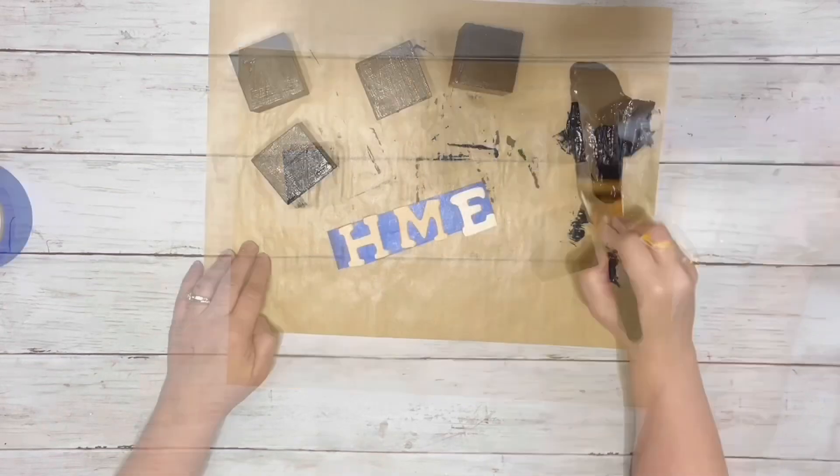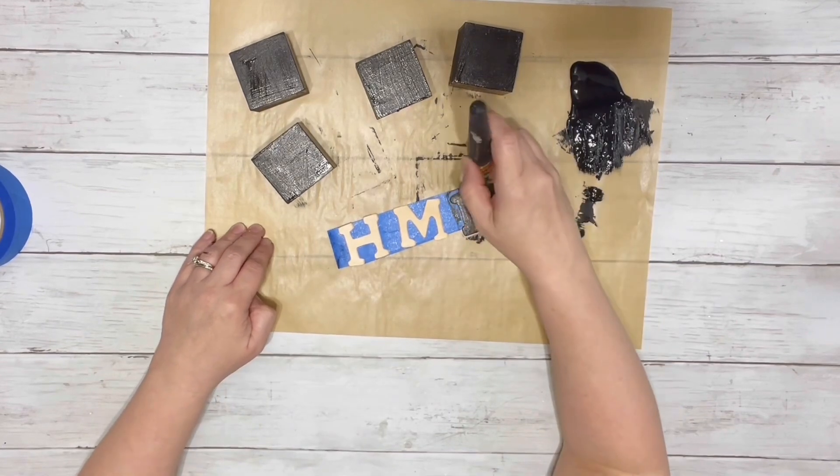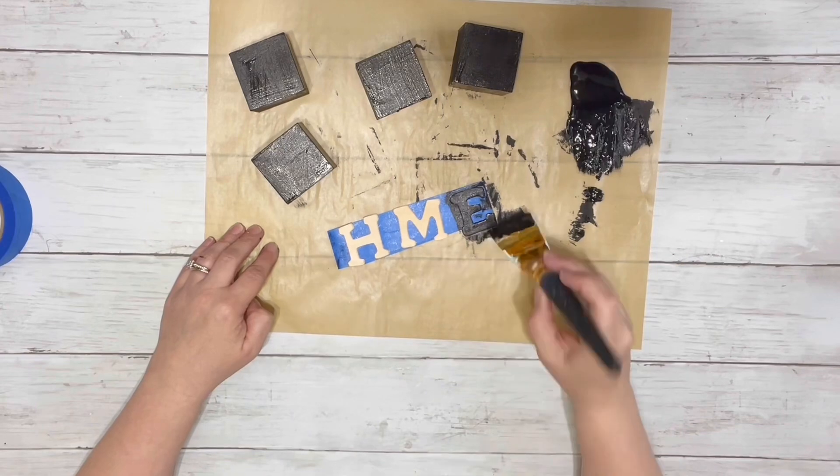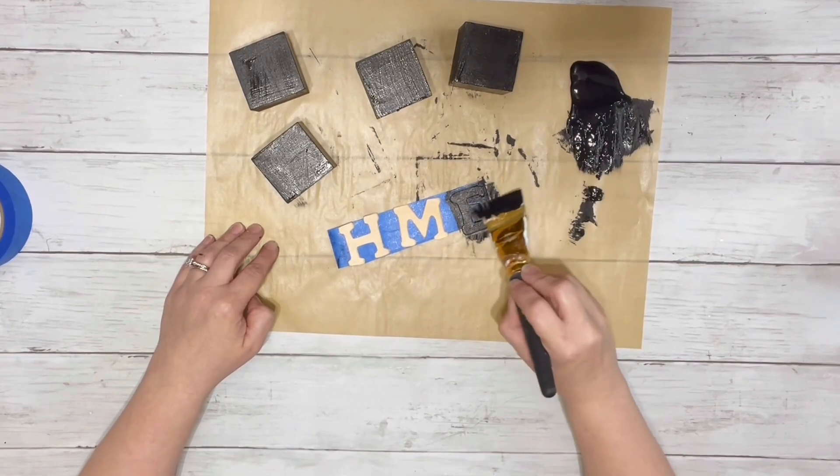Next, I took the H, M, and E letters. These were in a pack from Dollar Tree. I just put them on a piece of tape and painted them with the same black chalk paint.